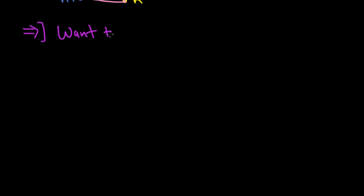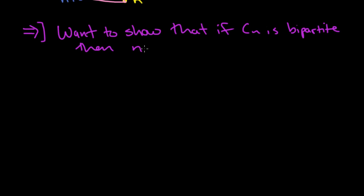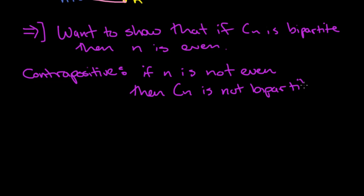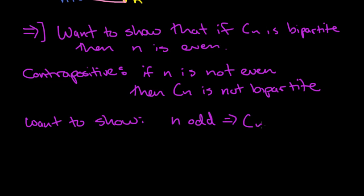We want to show the other direction: if Cn is bipartite, then n is even. The way we will do this is by considering the contrapositive. The contrapositive of a statement is equivalent to the actual statement. The statement says if the cycle is bipartite, then n is even; the contrapositive states that if n is not even — that is, n is odd — then the cycle is not bipartite. So we want to show that n odd implies Cn not bipartite.